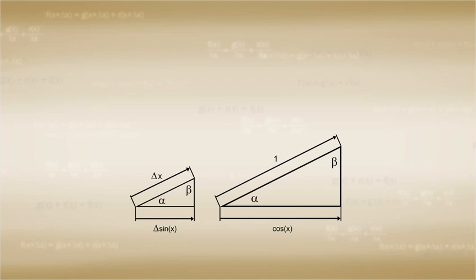Take note that we can conclude that delta sine of x over delta x is equal to cosine of x over 1, which is to say that the derivative of sine of x is equal to cosine of x.